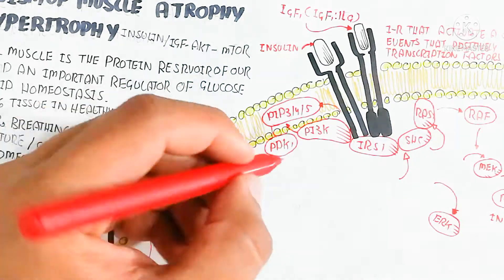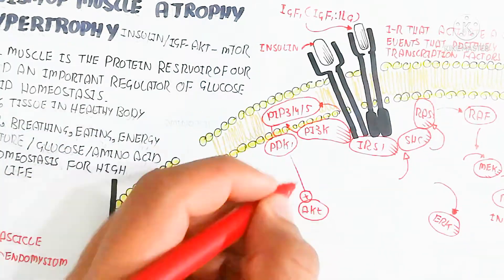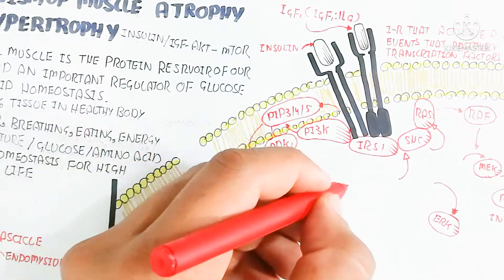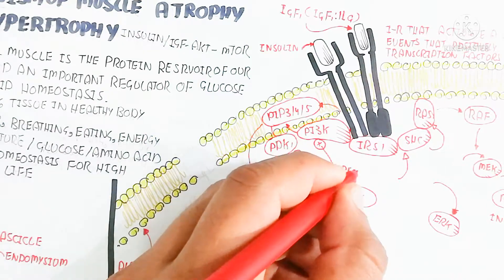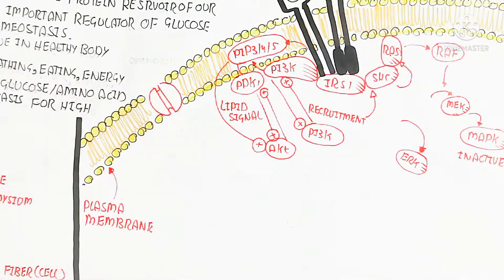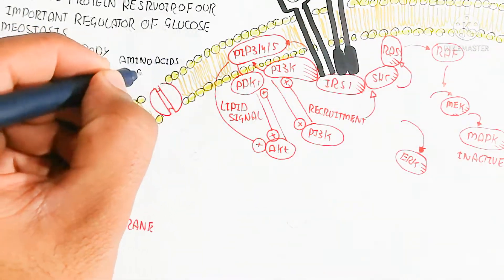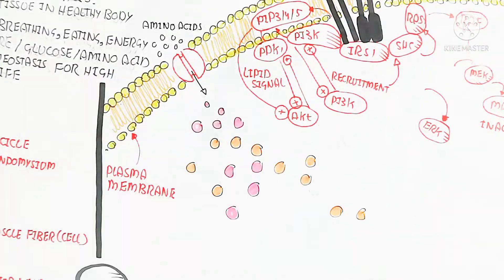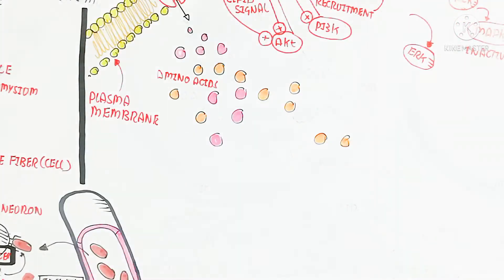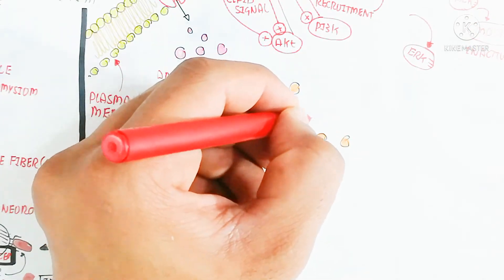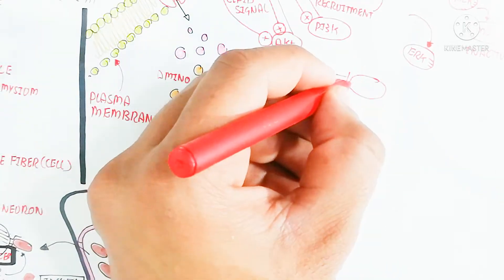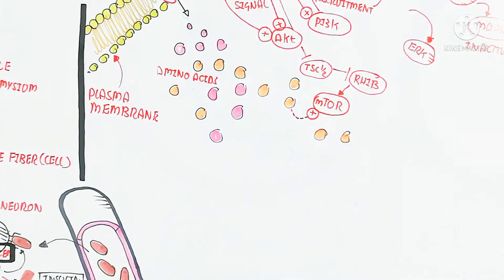PIP3 — phosphatidylinositol 3,4,5-trisphosphate — triggers PI3K (phosphatidylinositol 3-kinase) recruitment. This recruitment further activates PDK1. PDK1 recruits AKT, and lipid signaling also triggers AKT. AKT is very important — its function is to trigger the mTOR pathway. The mTOR pathway — mechanistic target of rapamycin — will also be discussed.